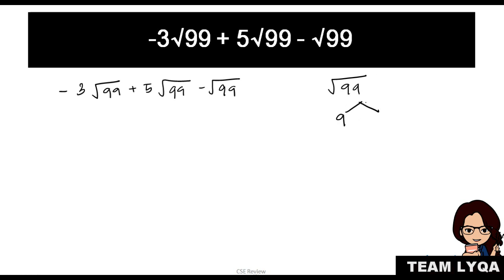You have 9 and 11. Because 9 times 11 is 99. The 9 can be divided further. 3 times 3 is 9. And you have two 3s here. So that means you can take it out. So the square root of 99 will turn into 3 square root of 11. So the 3 square root of 11 is equivalent to each square root of 99 there.